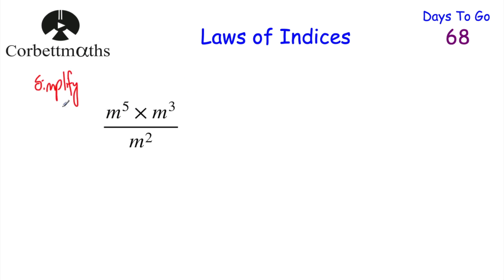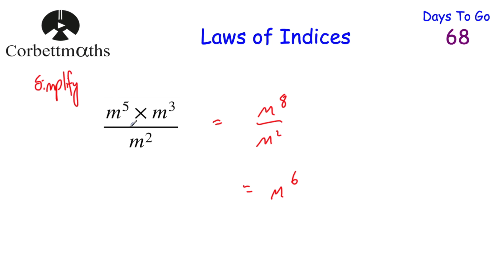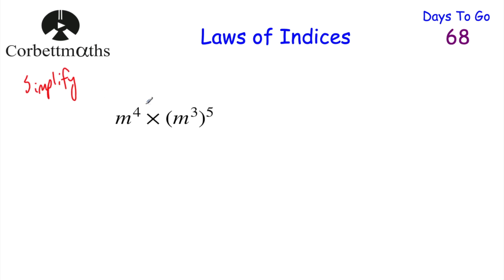Let's look at our first worked question: simplify M to the power of 5 multiplied by M cubed, all over M squared. Pause the video and try this. To simplify, first work out the numerator: M to the power of 5 multiplied by M to the power of 3 — same base, add the powers — gives M to the power of 8. That's still divided by M squared. Now dividing with the same base, subtract the powers: 8 take away 2 gives M to the power of 6. If you got that, well done.